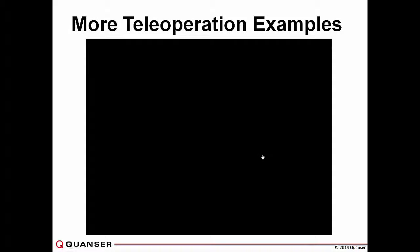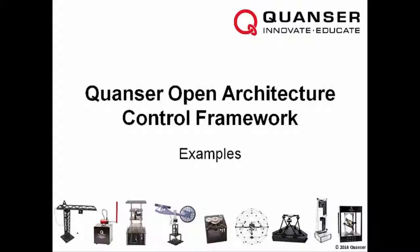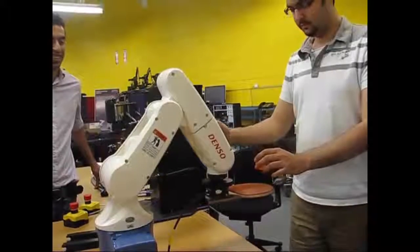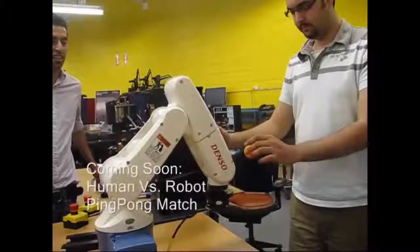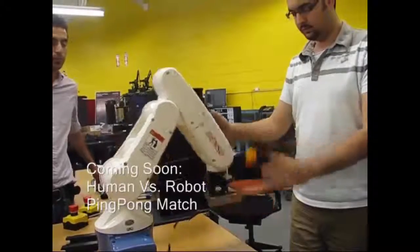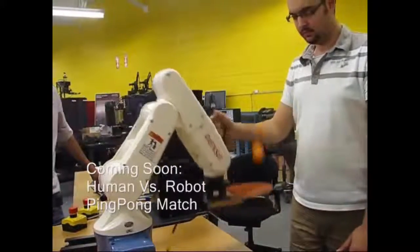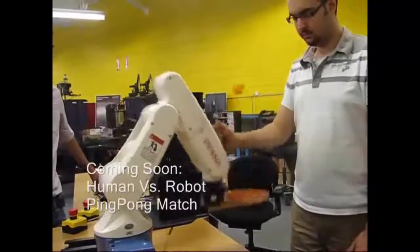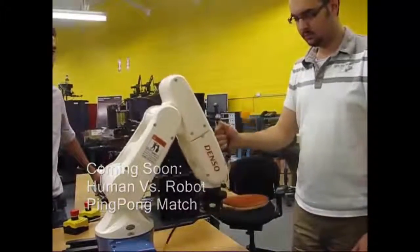We start with a ping pong ball teleoperation application. The user is holding the HD Squared, moving back and forth, and can feel the force. You will see the motion is the same as the motion of the Denso arm.